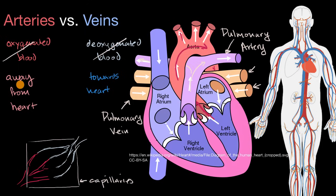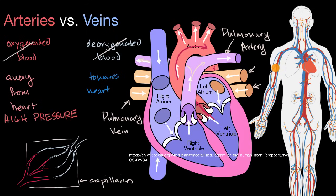Now that we have the main distinction between arteries and veins, what are some other interesting things to know? Since arteries are being pumped directly by the heart, they have high pressure. If you were to accidentally cut an artery, because of that high pressure, it would spurt blood much more than if you cut a vein. Most common cuts — like pricking your finger — really just cut capillaries, which is why blood comes out very slowly.